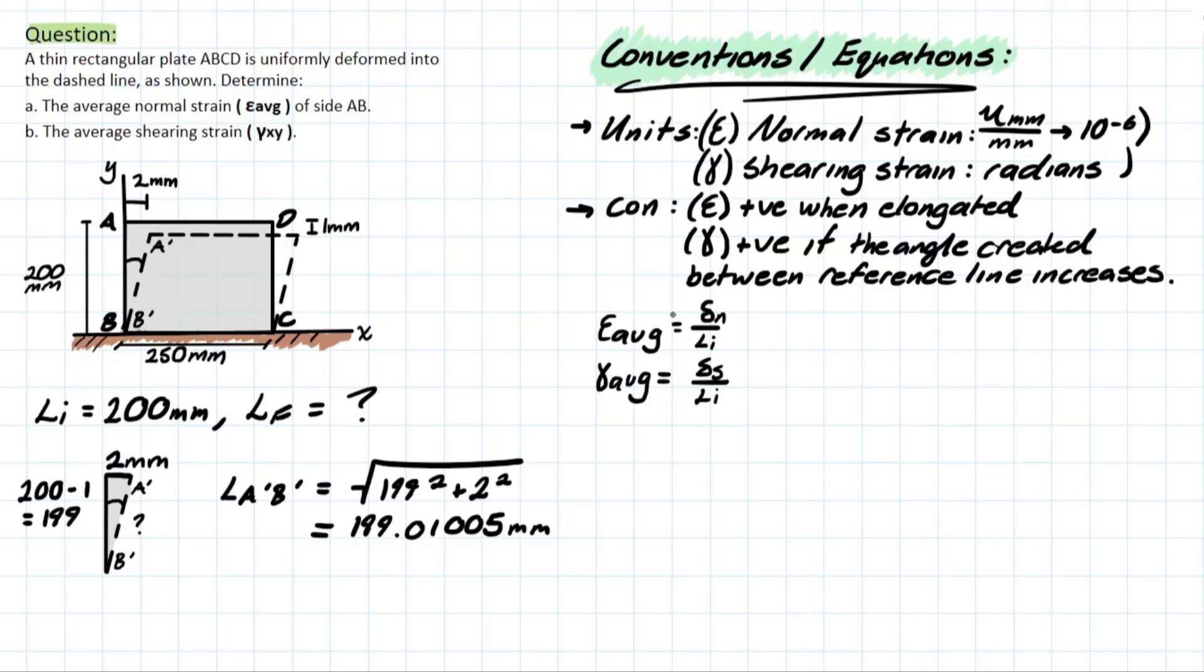So now we can actually plug into this epsilon average equation or normal strain average. And this is going to equal the deformation created with respect to this direction. So what is that going to be? That's going to be the initial length and the final length being considered.